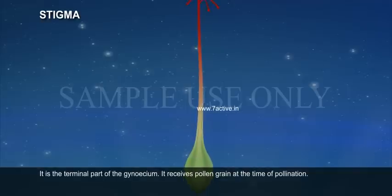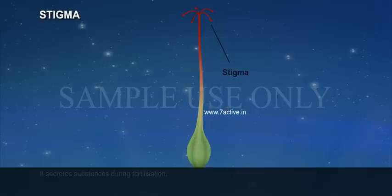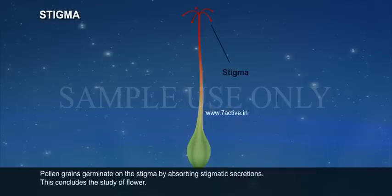Stigma: It is a terminal part of the gynoecium. It receives pollen grains at the time of pollination. It secretes substances during fertilization, and pollen grains germinate on the stigma by absorbing stigmatic secretions. This concludes the study of the flower.